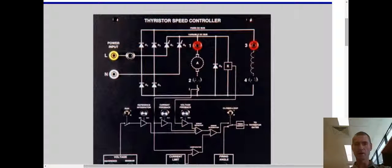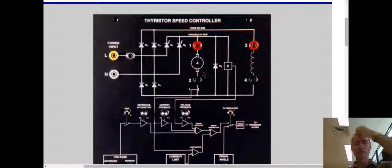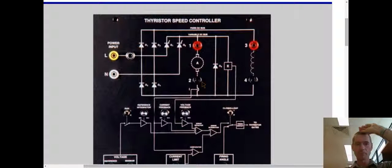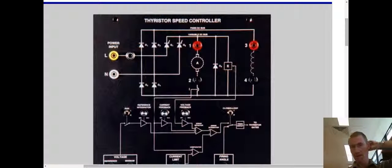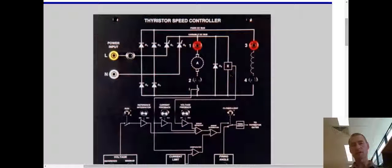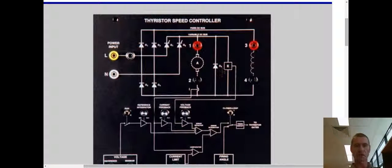And terminals one and two are the outputs of the thyristor rectifier, variable DC bus, which goes to the armature. And we're measuring current and voltage, current through the armature winding and voltage across the armature winding.